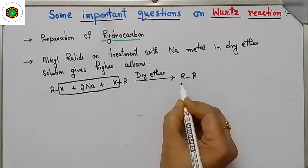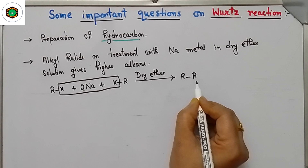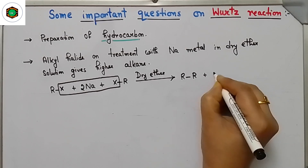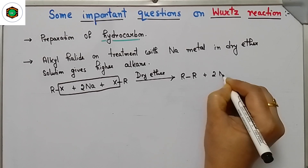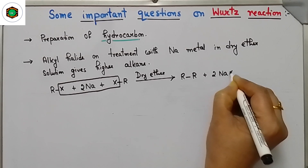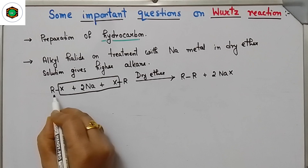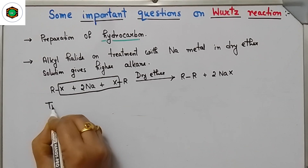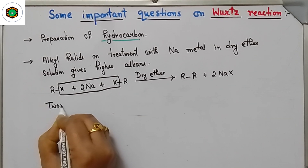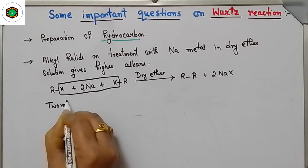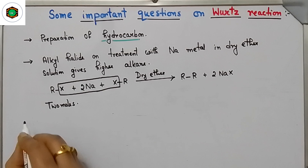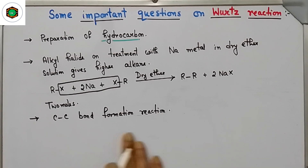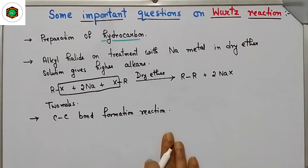Carbon-carbon bond formation is taking place here and NaX is removed. Two moles of alkyl halides are reacting — this is a carbon-carbon bond formation reaction.